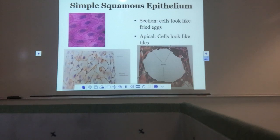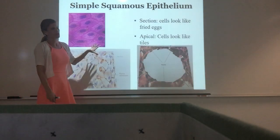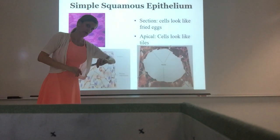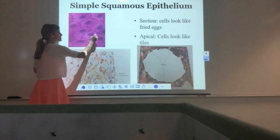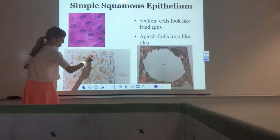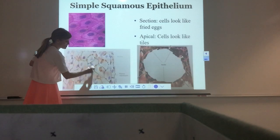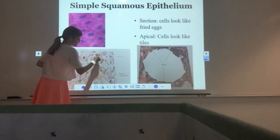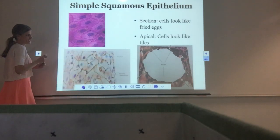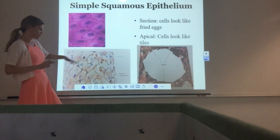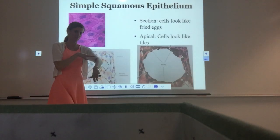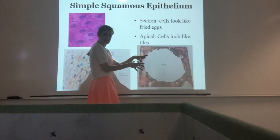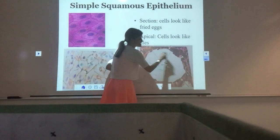Looking at pictures of simple squamous tissue: some views are from the apical view — looking down at the tissue from the top. When you see this, it looks like tiles with the nucleus in the center of each cell, all packed right up against each other with no space in between. This is simple squamous epithelial tissue. In a cross-section view, you can see the open lumen — that open space is just air — and the tissue lining the outside must be epithelial.